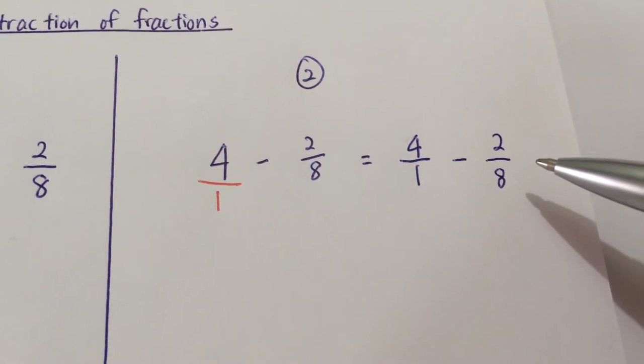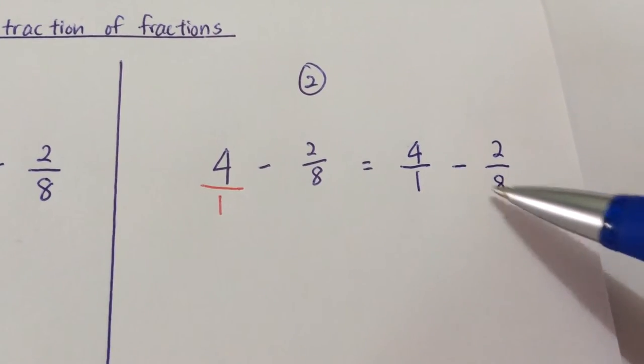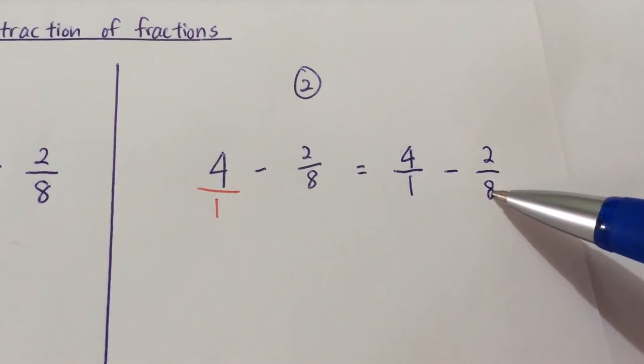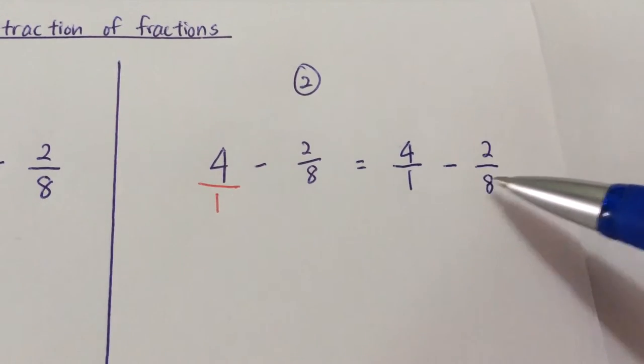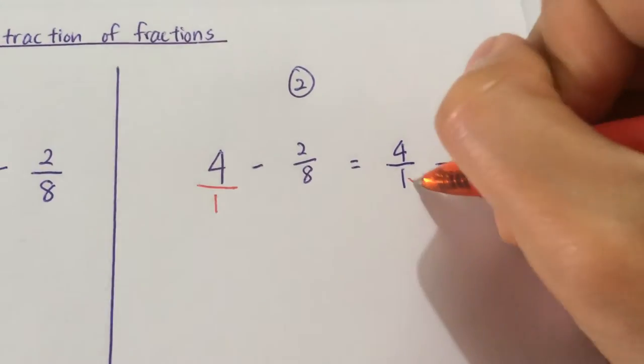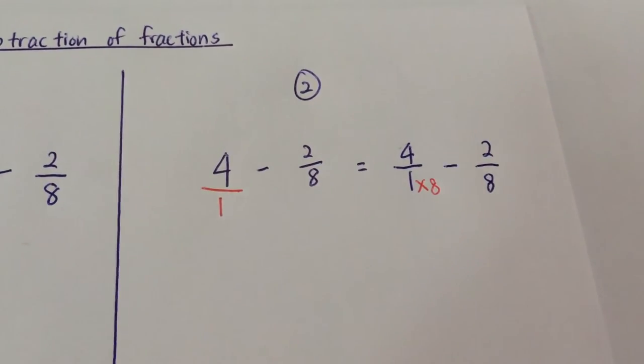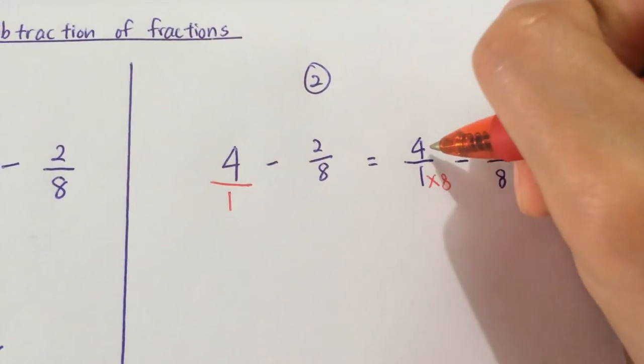Remember I mentioned that before you can subtract or add, the denominator must be the same. This is 1 and this is 8, so I can't subtract to get the answer. So, I must make them the same. 1 will multiply by 8 to get 8. And whatever I do to the denominator, I must also do it to the numerator.